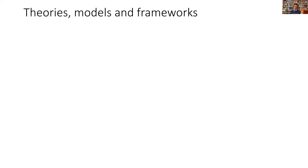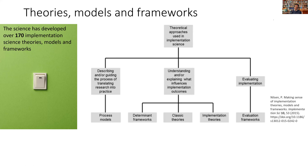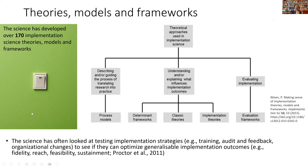Over the last 20-plus years, implementation science has given us lots of theories, models, and frameworks — now 170 of them. Nielsen does a great job of categorizing them into three main types: process models that describe or guide translating research into practice; determinant frameworks that tell us what helps or hinders implementation; and frameworks that help us evaluate it. The science has also tested strategies like training and audit and feedback, and has often focused on Proctor's generalizable implementation outcomes like fidelity, reach, feasibility, and sustainment.